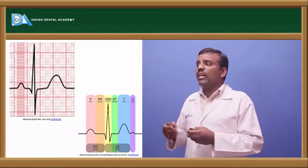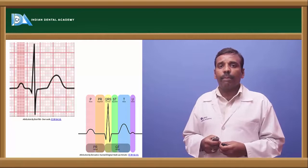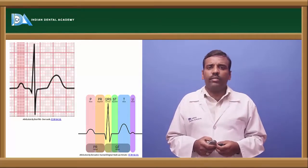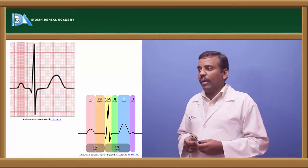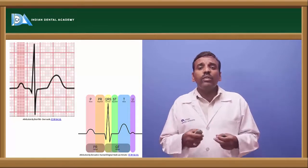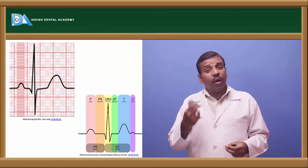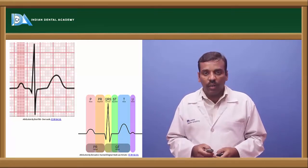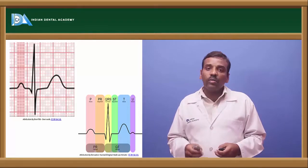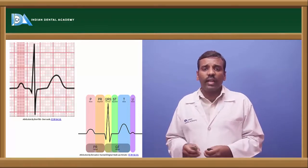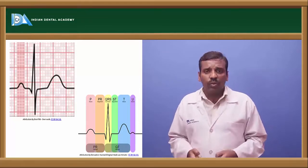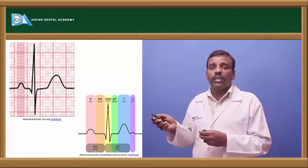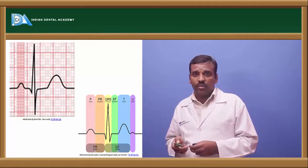In the ECG wave, the T wave and R wave are positive waves, while the Q wave and S wave are negative waves. The QRS complex includes Q as a negative wave, R as a positive wave, and S as a negative wave. From the diagram, we can easily identify the different waves and segments.